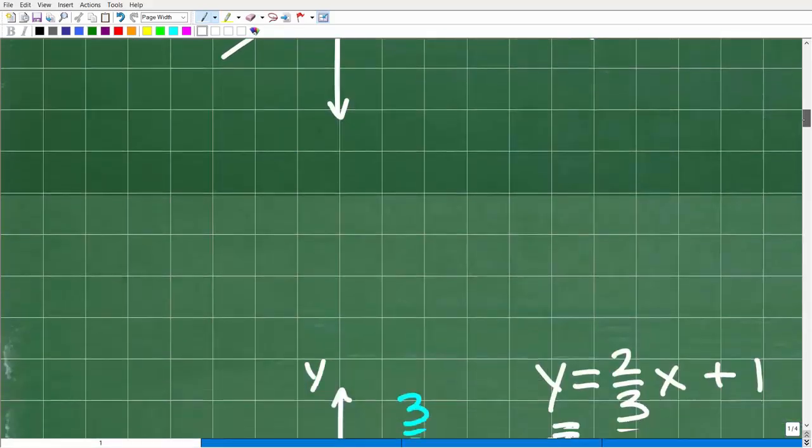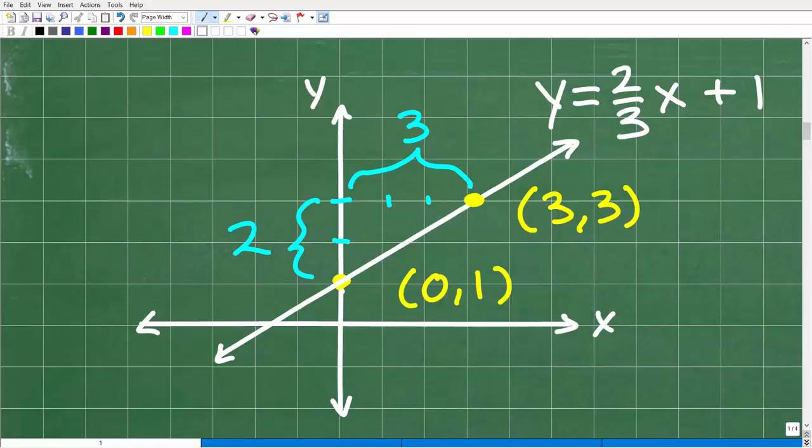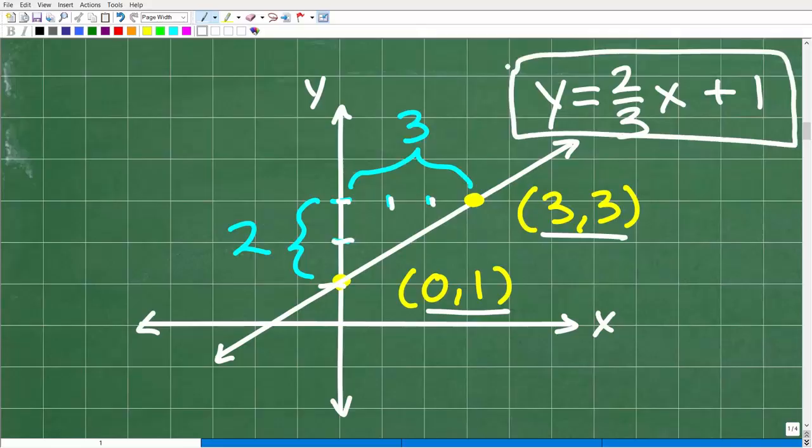So here you go. Now this point here is zero one. That is the Y intercept. And if we count, if we're just really careful about this, this is one right here. So if we went up two, so this is two, three, and then we went over one, two, three. So this point would be three, three, this point would be zero one. And then of course, our final linear equation is Y equals two thirds X plus one.